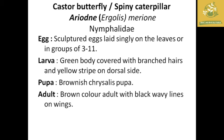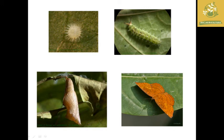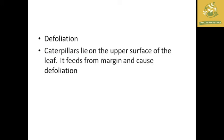The next pest is the castor butterfly, also called the spiny caterpillar. The scientific name is Iraota species and the family is Nymphalidae. The pupa is a Chrysalis pupa with brown color and black wavy lines on the wings. The major symptom is defoliation — caterpillars feed on the upper surface of the leaves causing marginal defoliation.